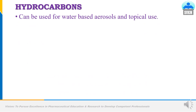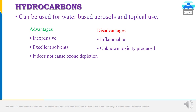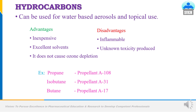Hydrocarbons are also used as propellants. They can be used for water-based aerosols and topical use. Their advantages are that they are inexpensive, excellent solvents, and do not cause ozone depletion like chlorofluorocarbons. Their disadvantage is that they are flammable and produce unknown toxicity. Examples are propane, isobutane and butane, also called propellant A108, propellant A31, and propellant A70.